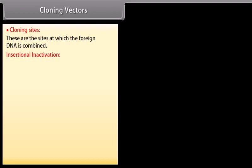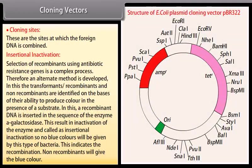Insertional inactivation: Selection of recombinants using antibiotic resistance genes is a complex process. Therefore, an alternate method was developed in which transformants, recombinants, and non-recombinants are identified on the basis of their ability to produce color in the presence of a substrate. A recombinant DNA is inserted into the sequence of the enzyme alpha-galactosidase. This results in inactivation of the enzyme — called insertional inactivation — so no blue color will be produced by this type of bacteria, indicating recombination. Non-recombinants will give the blue color.